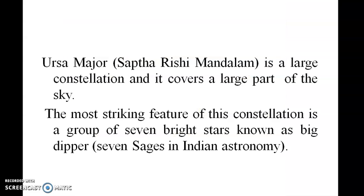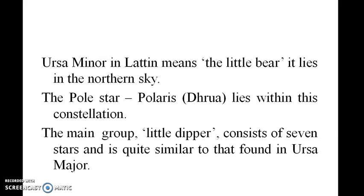Ursa Major is a large constellation and occupies a large part of the sky. Its most striking feature is a group of seven bright stars known as the Big Dipper. Ursa Minor, whose Latin name means 'little bear', lies in the northern sky. The Pole Star lies within this constellation. The main group of the Little Dipper also consists of seven stars and is quite similar to the one found in Ursa Major.